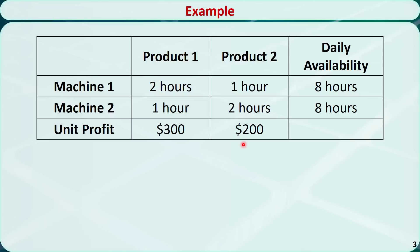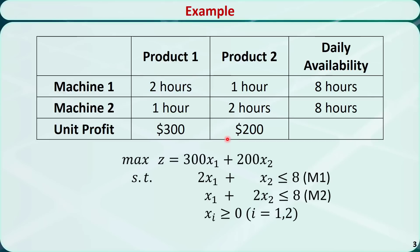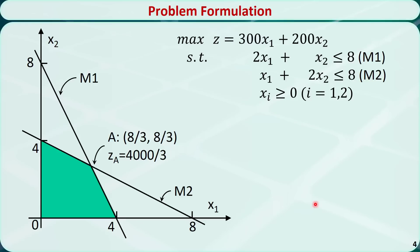We let x1 be the number of product 1 produced and x2 the number of product 2 produced. We formulate a linear programming problem to maximize daily profit, which is the total profit of selling products 1 and 2. The first constraint means total processing time on machine 1 should not exceed 8 hours, and the second constraint means total processing time on machine 2 should not exceed 8 hours. Since this problem has only two variables, we solve it graphically. The shaded area is the feasible region, and point A is the optimal solution with an objective function value of 4000/3.